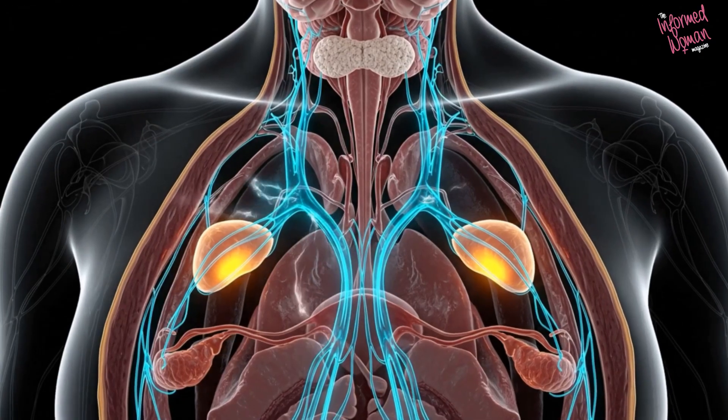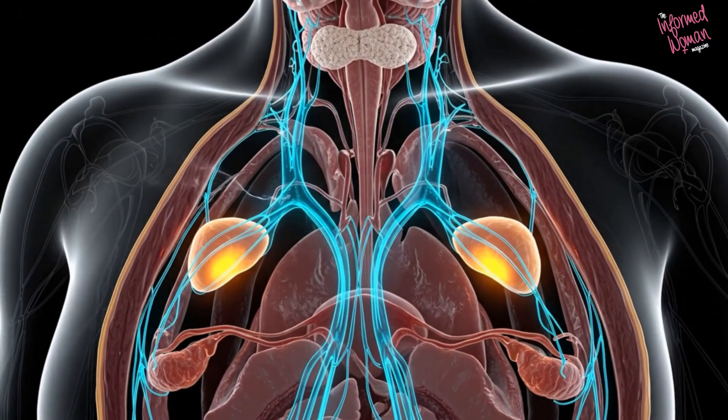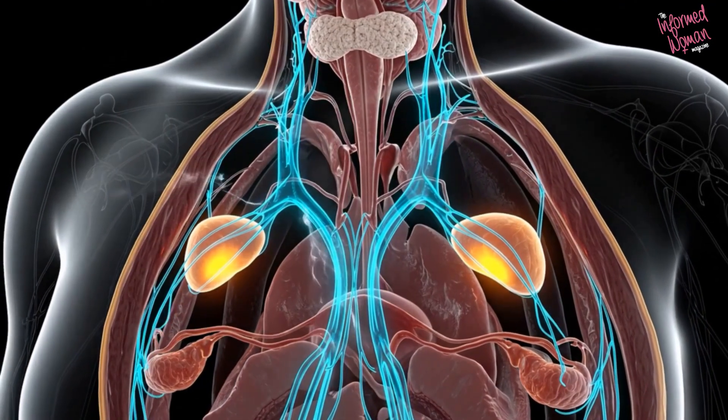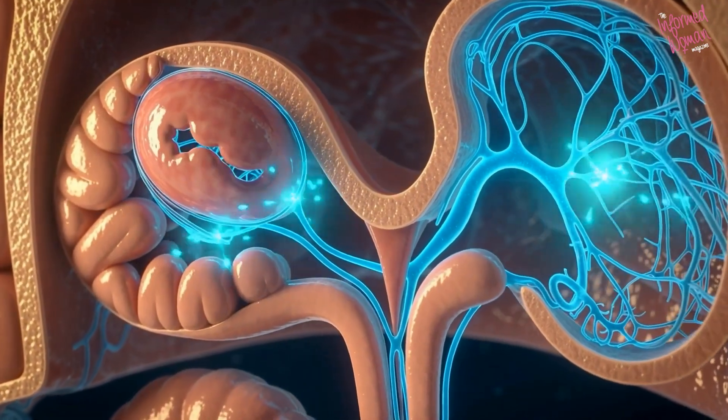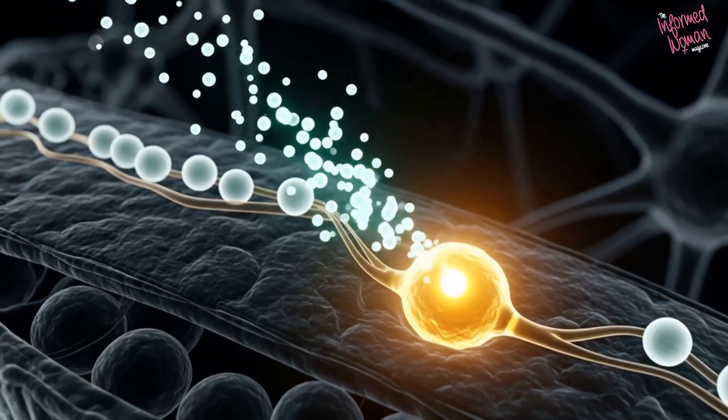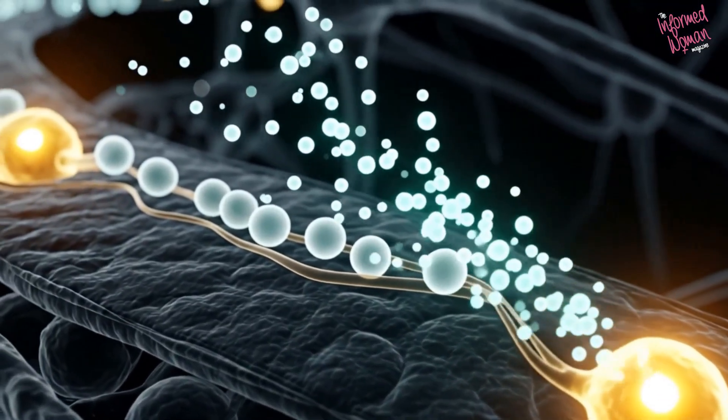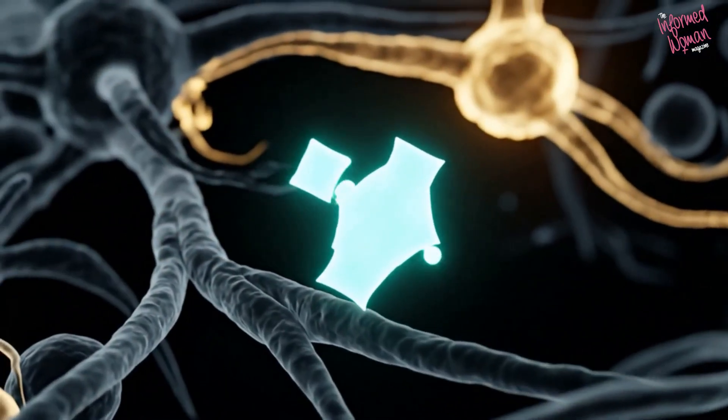The hypothalamic-pituitary-ovarian axis, or HPO axis, is the command system that regulates reproductive function. It begins in the hypothalamus, which releases gonadotropin-releasing hormone, or GNRH, in a pulsatile rhythm.